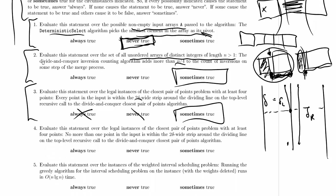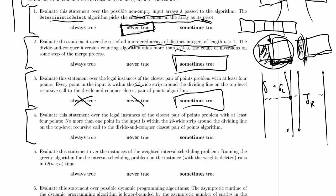Next, evaluate this statement over the same instances: no more than one point in the input is within the 2-delta-wide strip on the top-level recursive call. We've already seen one example where more than one point is inside the strip, and in the earlier erased example, essentially only the center point was in the strip. So we have one case where only one point is inside and one case where more than one is inside — this is sometimes true.